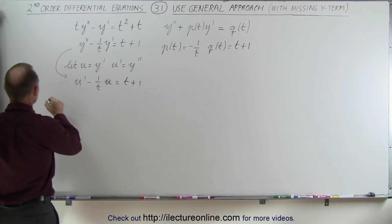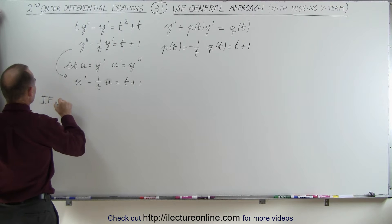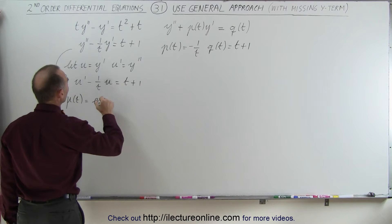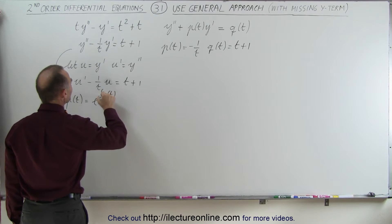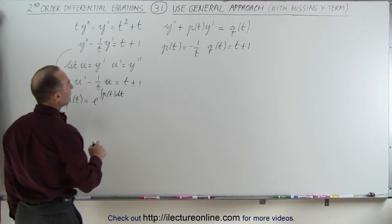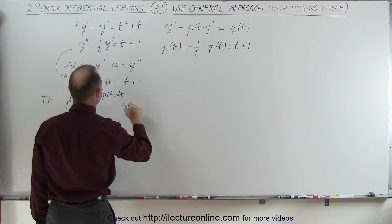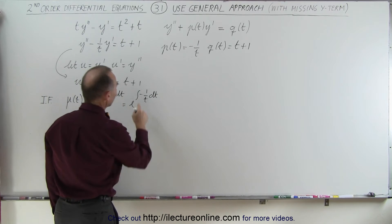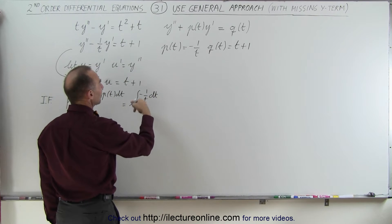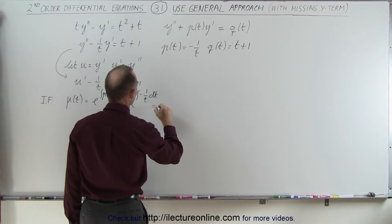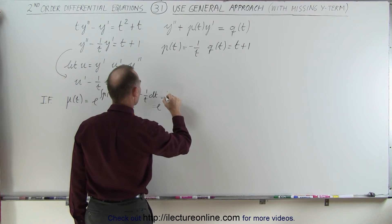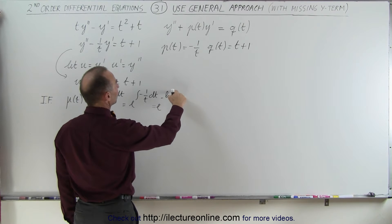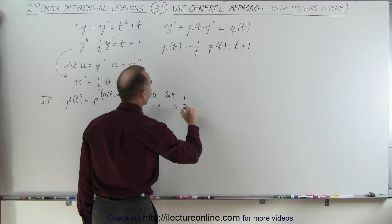Now we need an integrating factor. The integrating factor μ of T equals e to the integral of P of T dt. Plugging in P of T, that gives us e to the integral of negative 1 over T dt. Taking the negative out, the integral of 1 over T is the natural log of T, so this becomes e to the negative natural log of T, which equals 1 over T.